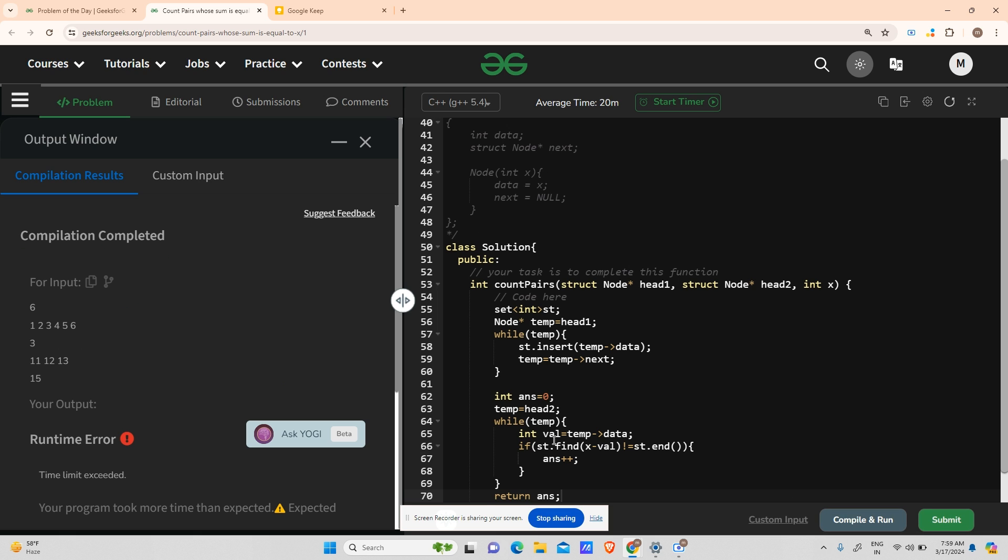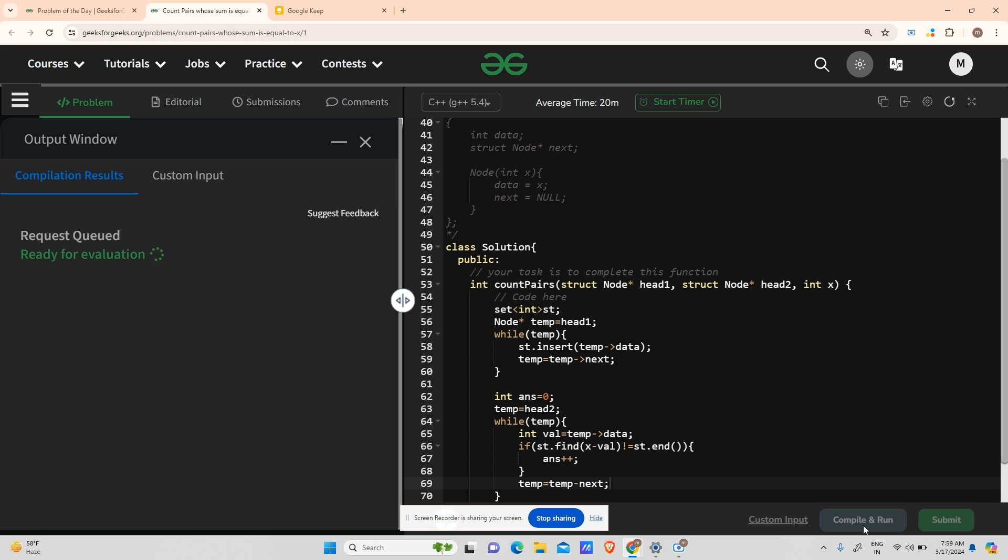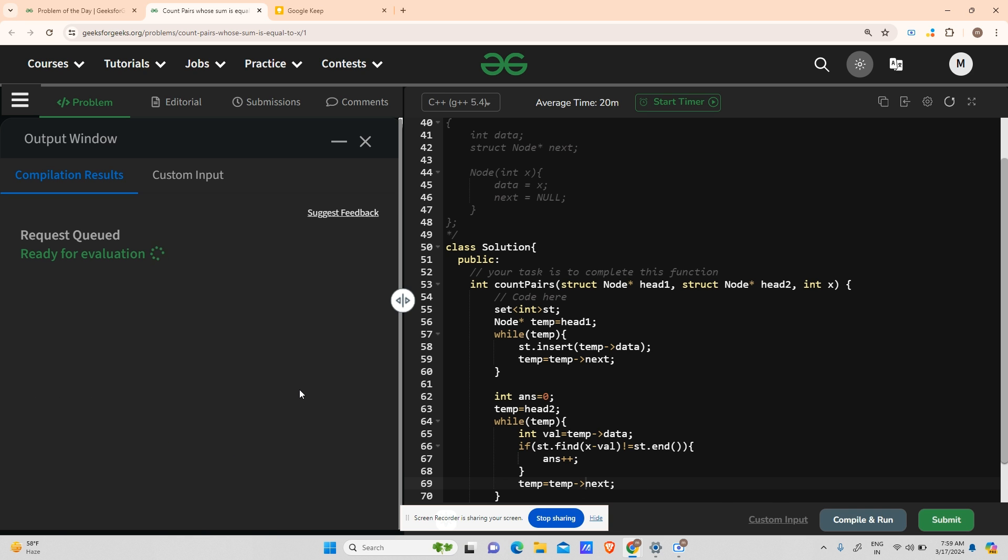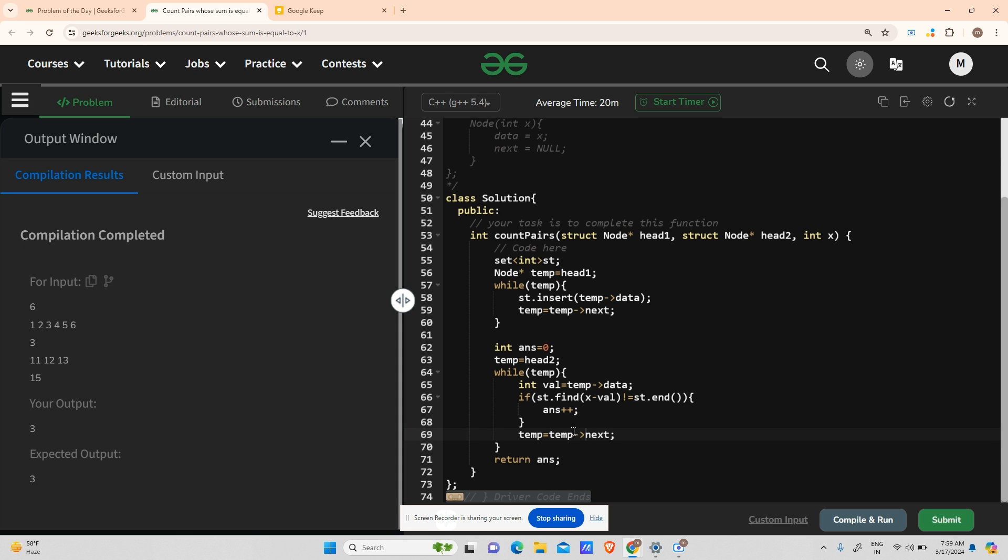Oh, there has been some error. Okay, temp equals to temp->next is not done. So it is running into an infinite loop. Let's see now what happens. Oh, again a mistake. Let's check it now. Okay, running fine. Let's compile and try for submit also.